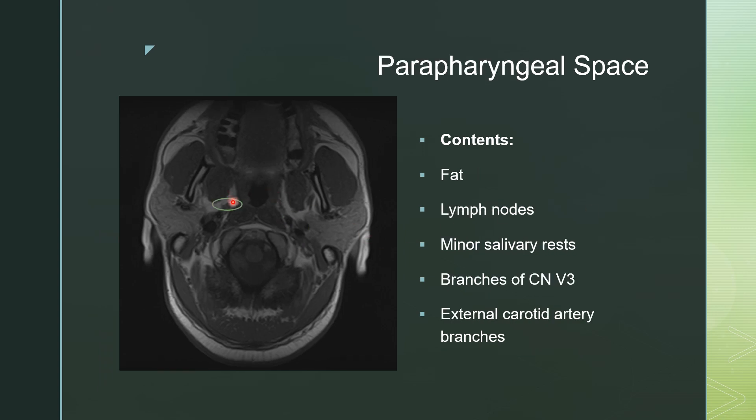The parapharyngeal space is predominantly composed of fat, but within that fat you can have lymph nodes. You also have minor salivary rests, branches of cranial nerve V3, and branches of the external carotid artery. So you can have a primary parapharyngeal space lesion — you can get liposarcoma, lymphoma, salivary gland tumors, neurogenic tumors involving the branches of cranial nerve V3, and vascular lesions involving those carotid artery branches.